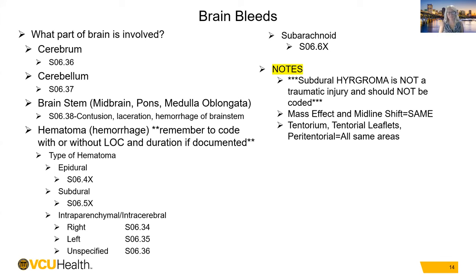Brain bleeds: first determine what part of the brain is involved. The cerebrum codes as S06.36, the cerebellum as S06.37, and the brainstem (midbrain, pons, medulla oblongata) as S06.38 — contusion, laceration, and hemorrhage of the brainstem. Remember the ICD-10 'and/or' guideline. For hematoma or hemorrhage, code with or without LOC and duration if documented. Types: epidural hematoma is S06.4X, subdural hematoma is S06.5X.